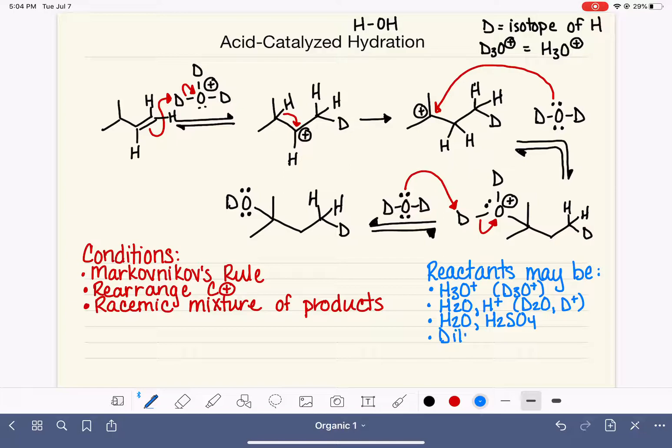you might see this written as dilute or sometimes just DIL abbreviation. Sulfuric acid, H2SO4. Dilute sulfuric acid, which means sulfuric acid that has had water added to it. So you could see the acid catalyst in any one of these versions. Recognize that they're all saying the same thing.